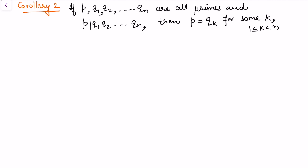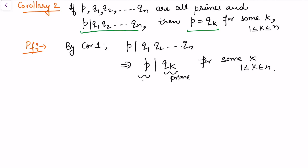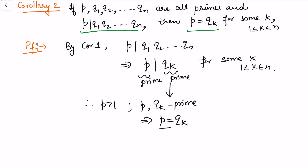In Corollary 2: if p, q1, q2, ..., qn are all prime and p divides the product q1·q2·...·qn, then p must equal q_k for some k. By Corollary 1, p divides q1·...·qn implies p divides q_k for some k between 1 and n. Since both p and q_k are prime, the only possibility by definition is that p equals q_k. Hence the result holds.